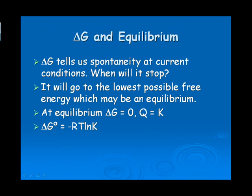Delta G tells us the spontaneity of a particular reaction. If that delta G happens to be zero, then Q would be equal to the equilibrium constant — so we're actually at equilibrium. The equation at the bottom determines the standard delta G based upon the equilibrium constant. We can actually come up with an equilibrium constant in the laboratory and then use that along with the temperature to determine the standard delta G. Again, delta G is not measured directly; rather, variables are measured and then used to calculate the delta G. This equation allows you to go from the standard delta G to the equilibrium constant.